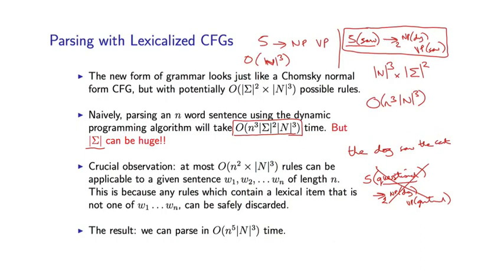We can actually restrict ourselves to a much smaller set of rules where we now have order N squared times N cubed because we have capital N choices for each of these three non-terminals. And then these two words, rather than being drawn from the full vocabulary, have to be drawn from one of the N words in the sentence.